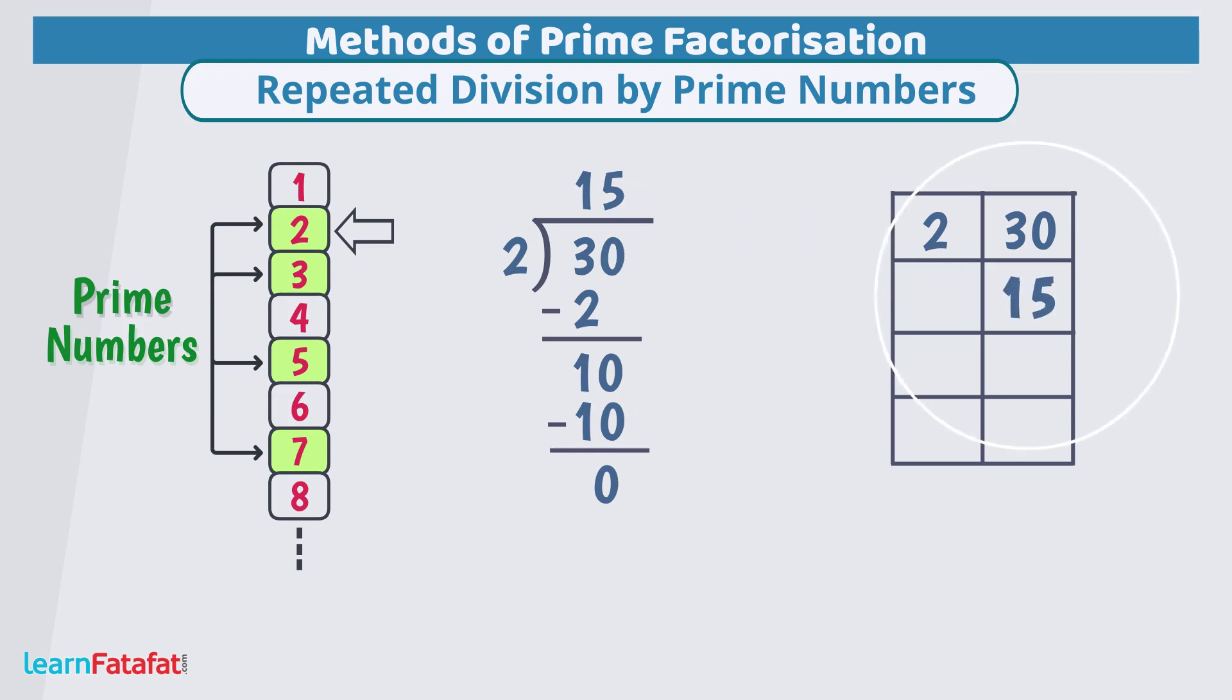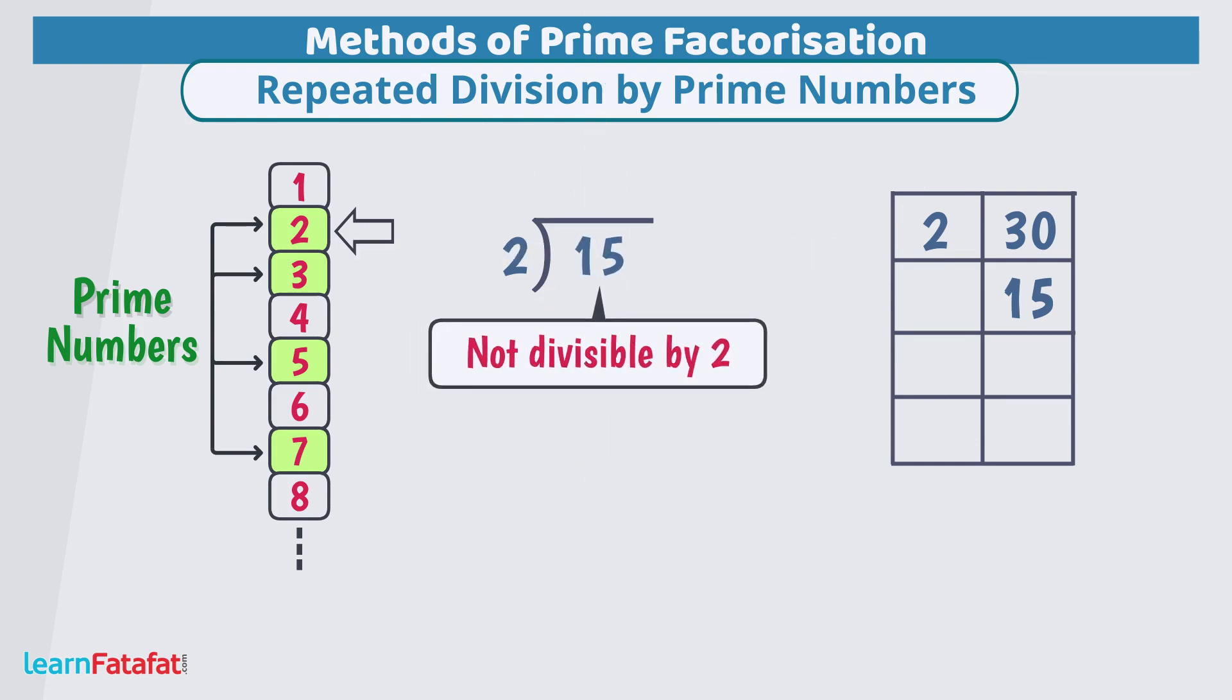Check if the new number 15 is also divisible by prime number 2. Here test for divisibility by 2 fails as units place digit of 15 is not 0, 2, 4, 6 or 8. So, 2 cannot divide this number. So, we select next prime number 3.